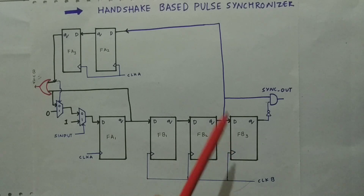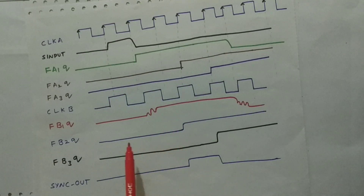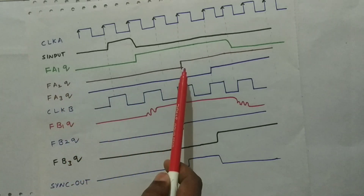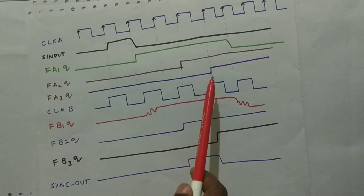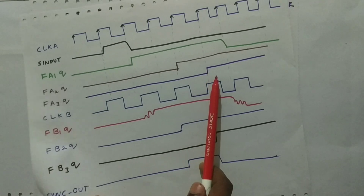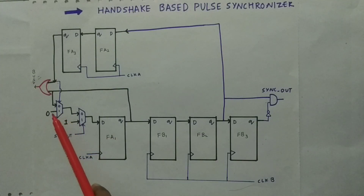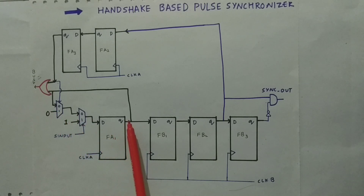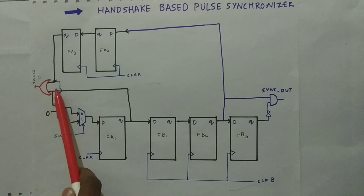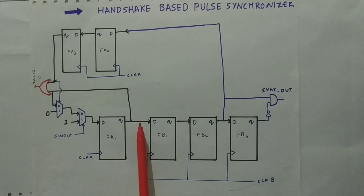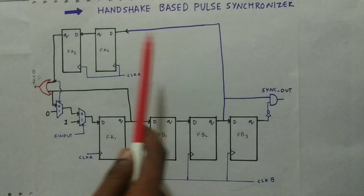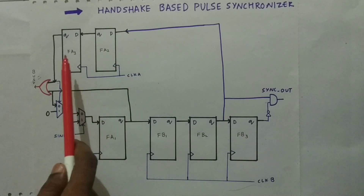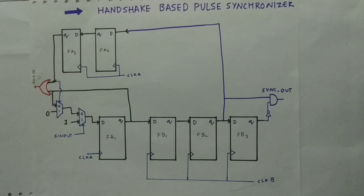When FB2Q goes high, FA2Q goes high and is passed to FA3Q. When FA3Q is high, the MUX selects 0, which is given to FA1Q, setting it to 0. However, the level is still high on the other side, so we must wait for the 0 to propagate through the flop synchronizers — through flops 1 and 2, then through flops 2 and 3 — before the busy signal finally goes low. Until then, FSM-A cannot generate another pulse.